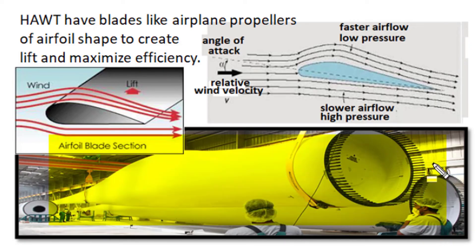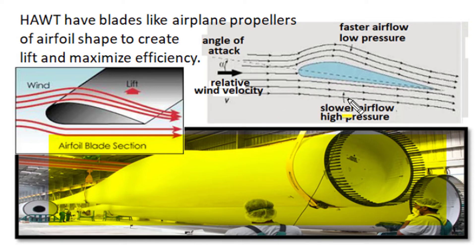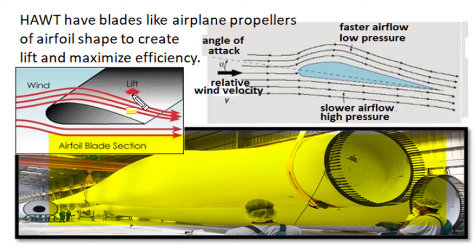Blades of horizontal axis wind turbines are like airplane propellers — they have a typical airfoil shape. When wind velocity attacks the turbine blade, the curvature and motion of the blade produce relatively reduced wind velocity on one side. Lower airflow increases pressure at the bottom side of the blade, while the curvature generates faster airflow at the top, decreasing pressure there. This pressure difference produces a lift action and angular movement of the turbine.